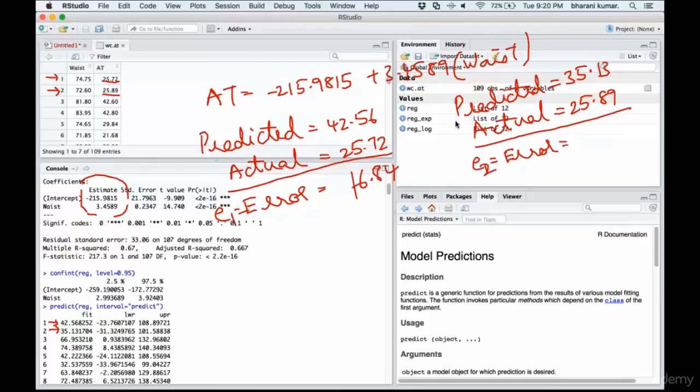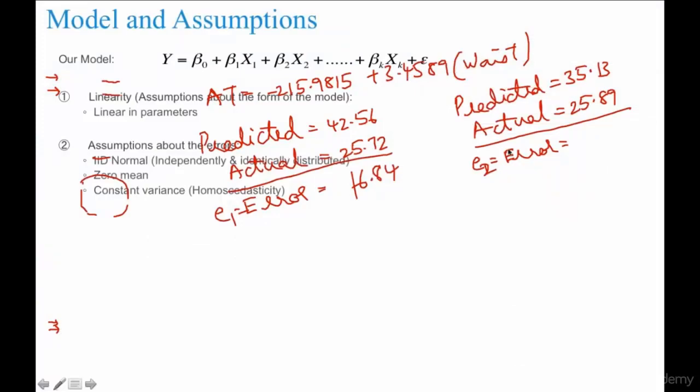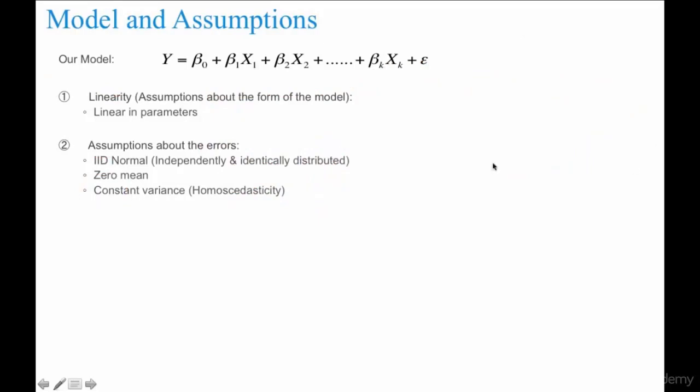In this way, you'll have errors for all 109 entries. You can, of course, calculate the average and variance for those errors. And errors should have zero mean. Average should be zero. And it should have constant variance. Variance should not be too much.